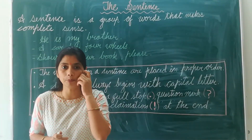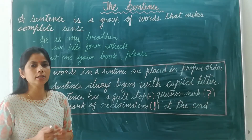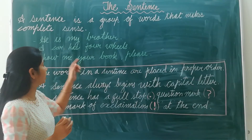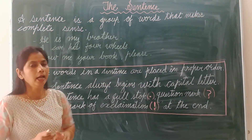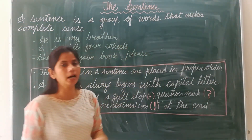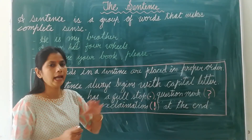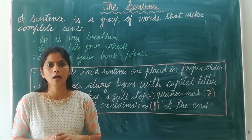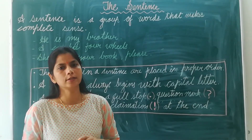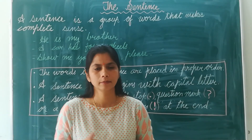So, these are the three important features of a sentence. First, the order of the words should be proper. Second, a sentence should begin with a capital letter. Third, it should end with a mark — a full stop, a question mark, or an exclamation mark. We will see the different kinds of sentences in our next class. Thank you, students.